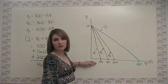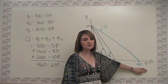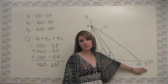And if we know that p is zero, we go through and we notice that our quantity that corresponds to a price of zero is, in this case, 460.